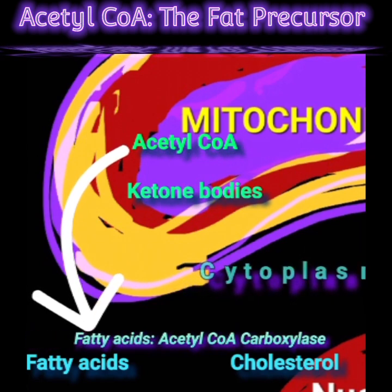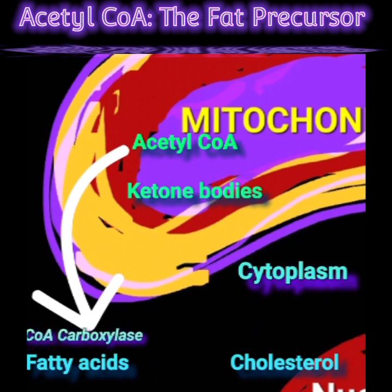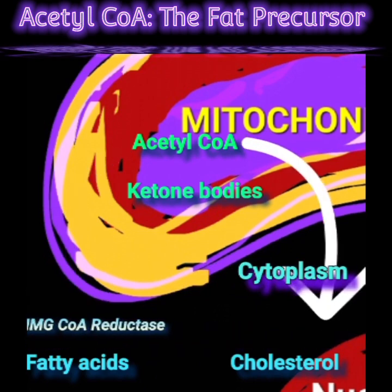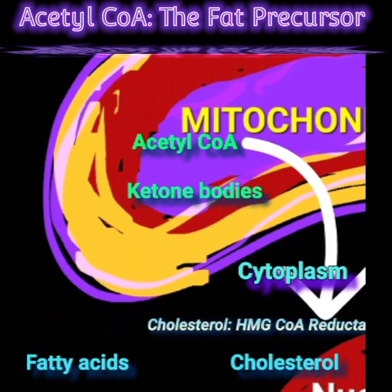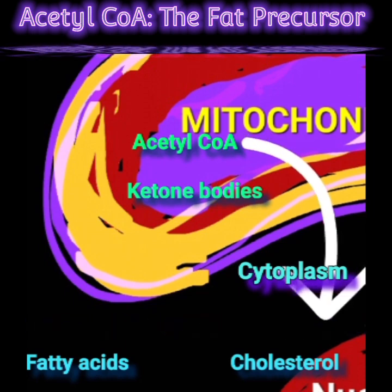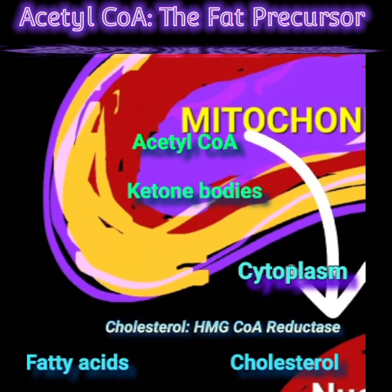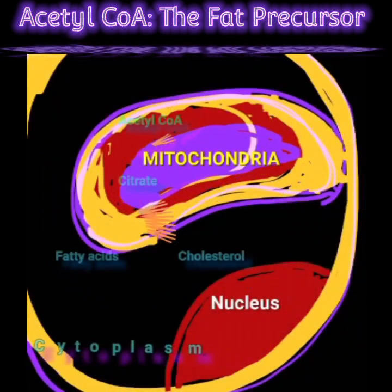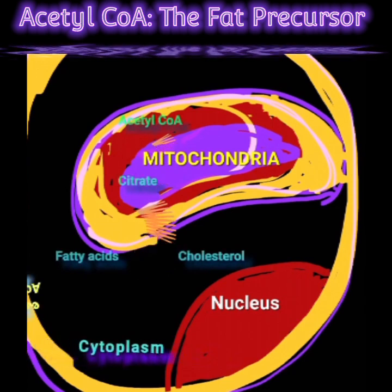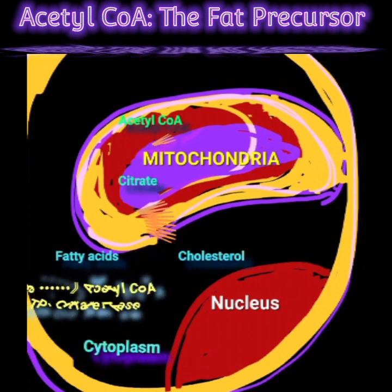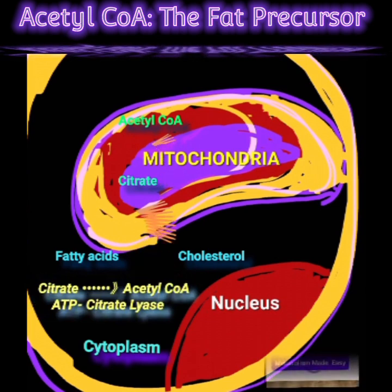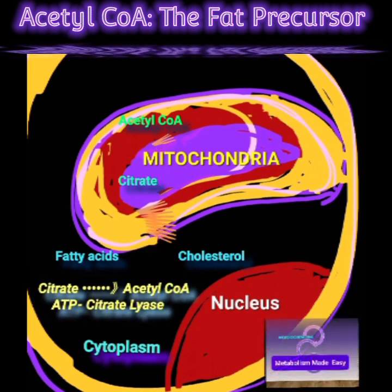Cholesterol synthesis takes place in the cytoplasm and the rate-limiting enzyme is HMG-CoA reductase. To provide a source of acetyl-CoA in the cytoplasm, citrate is transported to the cytoplasm where it is broken down to acetyl-CoA by ATP citrate lyase, thus providing the acetyl-CoA needed for both fatty acid and cholesterol biosynthesis.